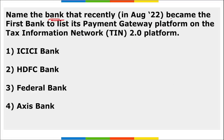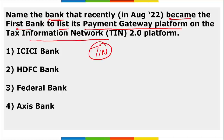Name the bank that recently became the first bank to list a payment gateway platform on the Tax Information Network 2.0 (TIN 2.0) network. It is Federal Bank, the first bank to list a payment gateway platform on the TIN 2.0 platform.